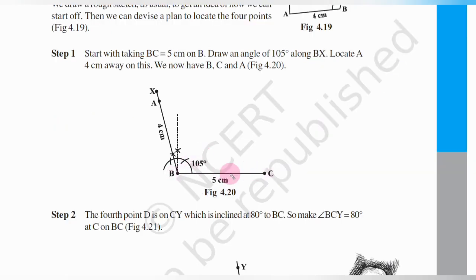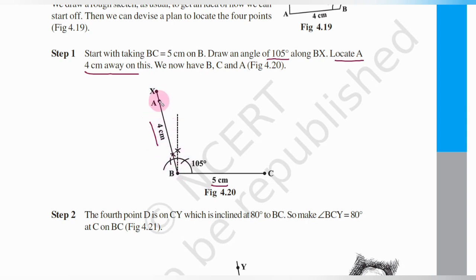Draw BC line segment of 5 cm. Then draw an angle of 105 degrees along BX — from point B, draw 105 degrees with the compass. We discussed how to draw such angles in previous videos. After drawing the 105 degrees angle, locate A, 4 cm away from B. Draw an arc of radius 4 cm from B. Now we have points B, C, and A.